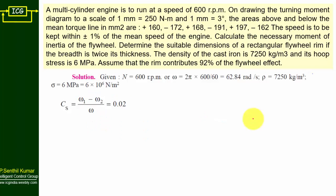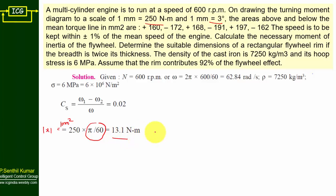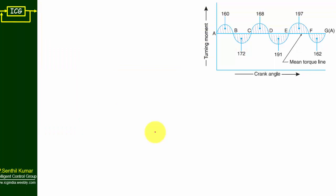We now move directly to the turning moment diagram, but first we find the scale factor. One mm² on the diagram equals 1 mm × 1 mm. On the other side, we have 250 Newton-meter and 3 degrees, converting 3 degrees to π/60 radians. So 250 × π/60 = 13.1 Newton-meter per mm² — that is the scale factor.